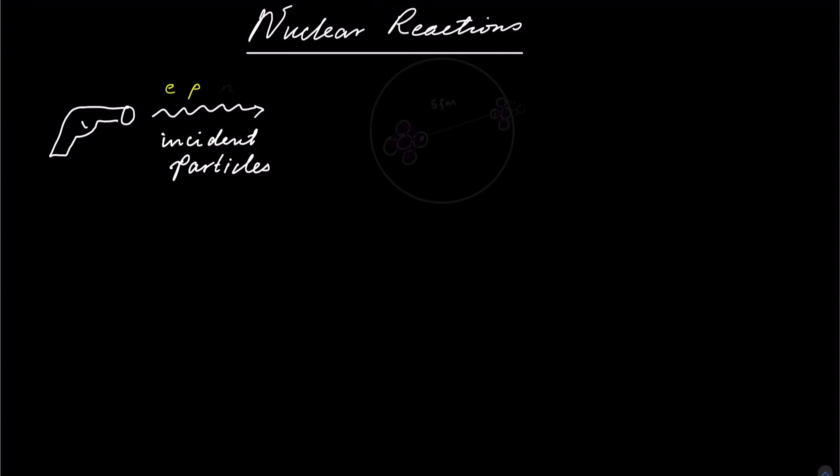Now let's look at the nuclear reactions and how they are achieved. Nuclear reactions are more like loading a gun with electrons, protons and neutrons, and targeting a nucleus. The wavelength must be within femtometers.